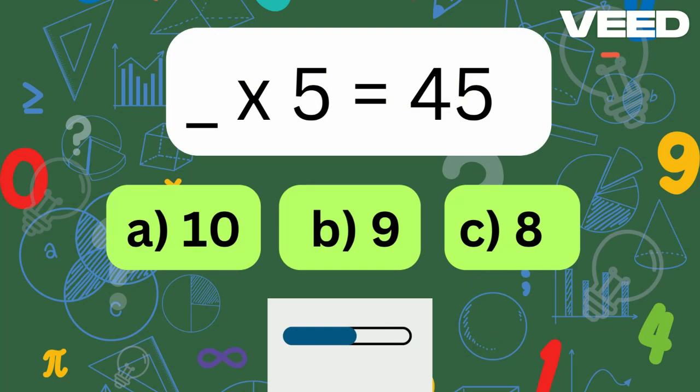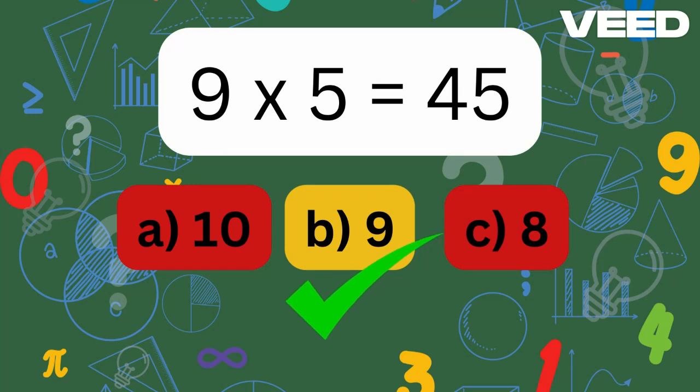What times 5 is equal to 45? Good job, 9 times 5 is 45.